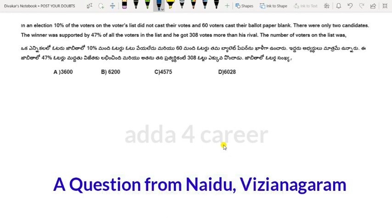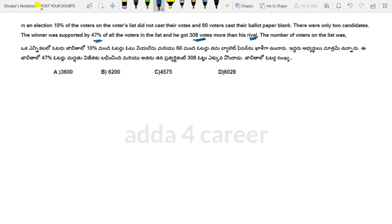In an election, 10 percent of the voters on the voter list did not cast their votes and 60 voters cast their ballot paper blank. There were only two candidates. The winner was supported by 47 percent of all the voters in the list and he got 308 votes more than his rival. The number of voters on the list was?